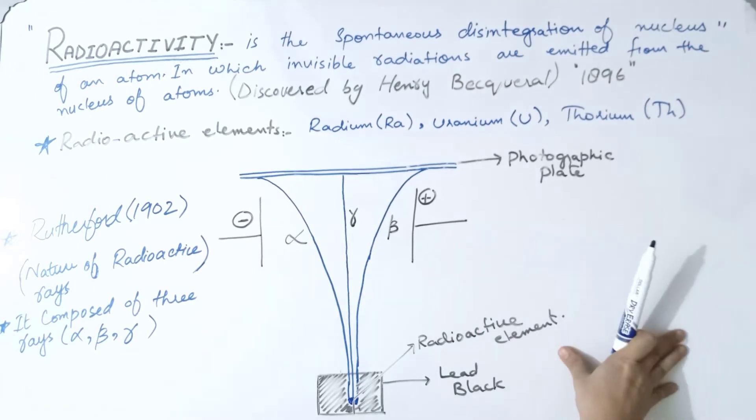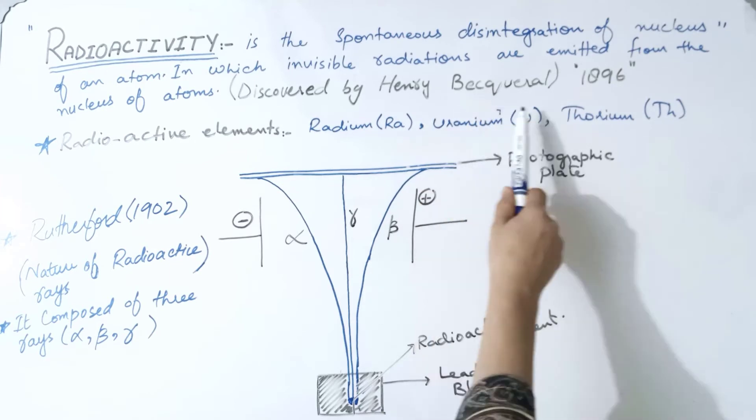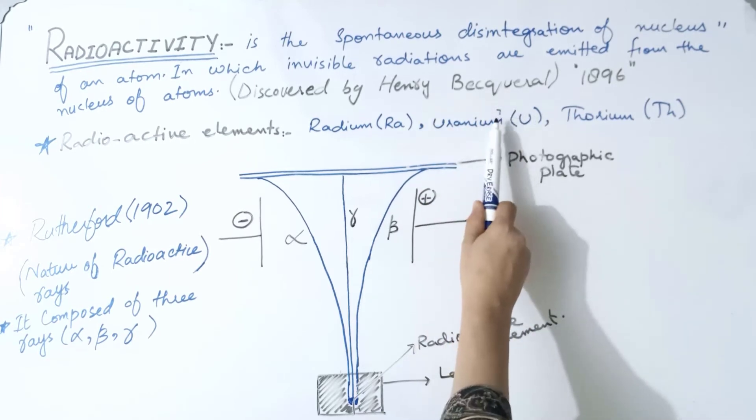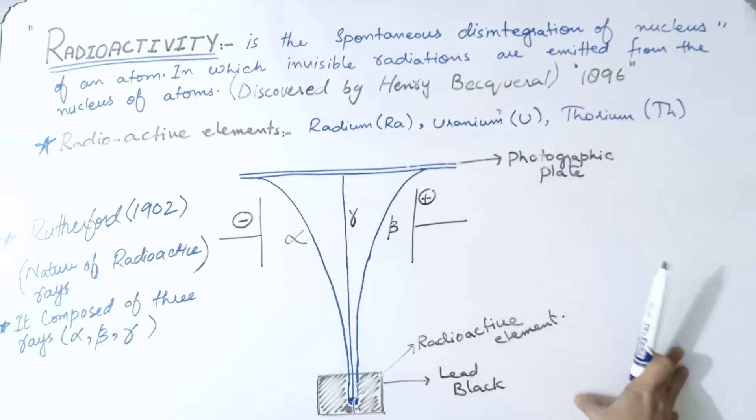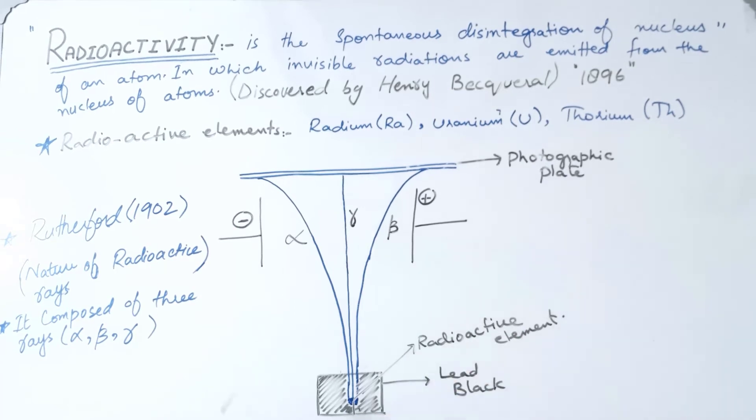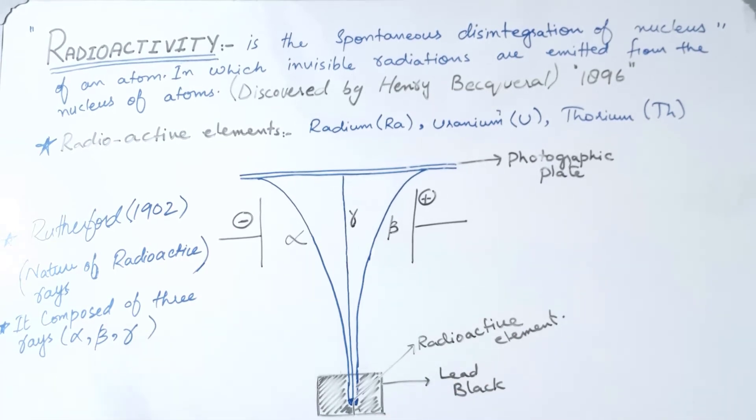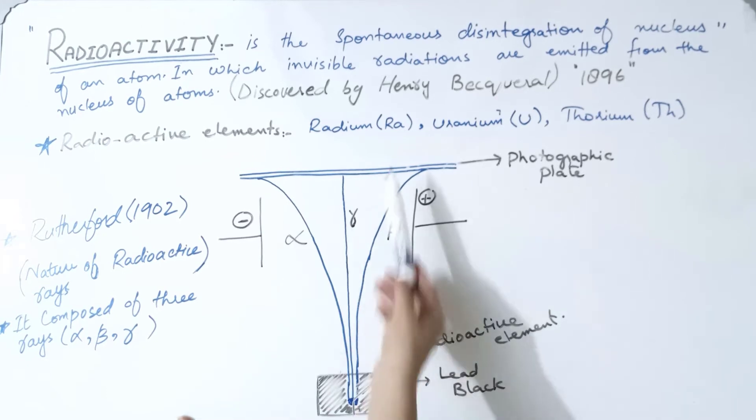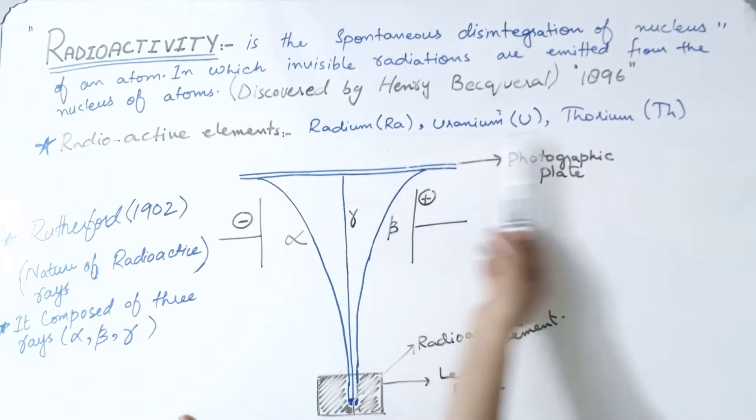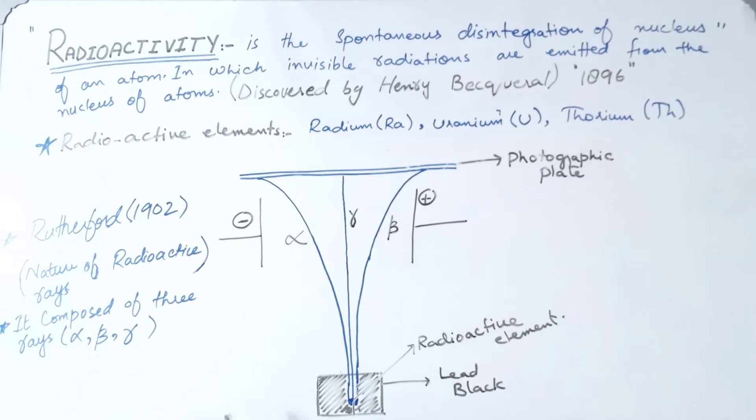Radioactivity was discovered in 1896. Now, radioactive elements are the elements which exhibit the phenomenon of radioactivity. For example, radium, uranium, and thorium.